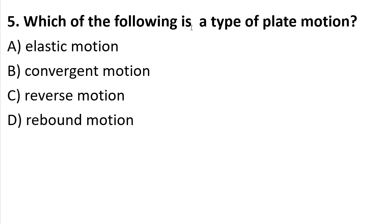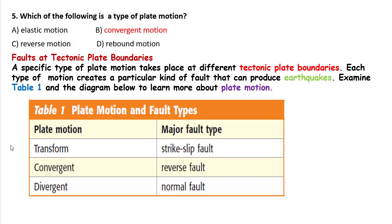Question 5: Which of the following is a type of plate motion? A) Elastic motion, B) Convergent motion, C) Reverse motion, D) Rebounded motion. There are three kinds of plate motions: transform, convergent, and divergent. Here there is only convergent motion listed, so the answer will be B — convergent motion. Each type of motion creates a particular kind of fault: transform produces strike-slip faults, convergent produces reverse faults, and divergent produces normal faults.